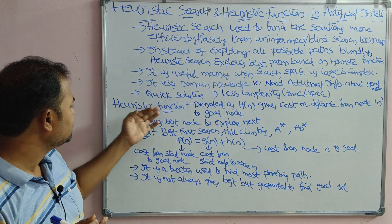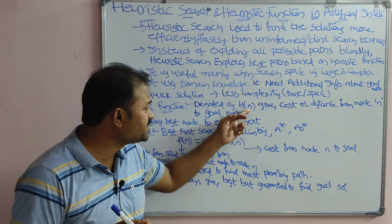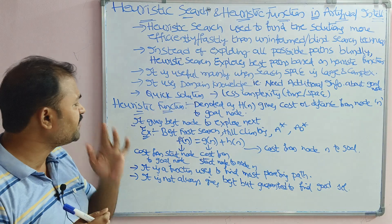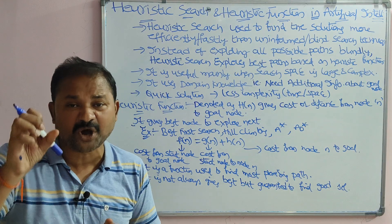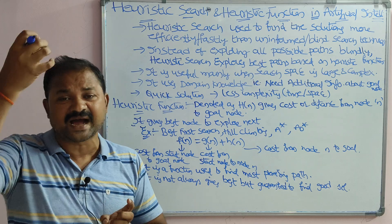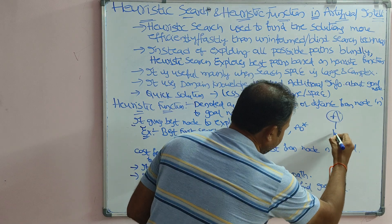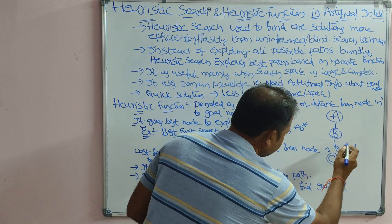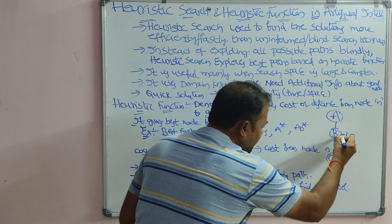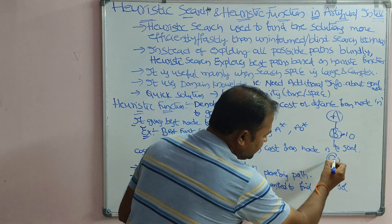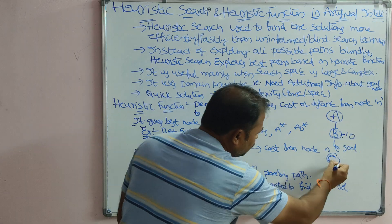Now let us look at some important points regarding the heuristic function. It is denoted as h(n) and gives the cost or distance from node n to the goal node. For example, consider a path A-B-C where the cost is 10. Here, h(n) gives the cost from node B to the goal node C, where C is the goal node.